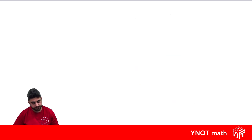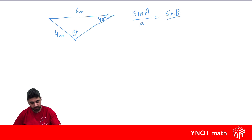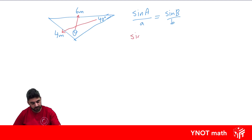Let's look at one more example. We have another non-right angle triangle with 40 degrees, theta, 6 metres, and 4 metres. Since we're finding an angle, we use the angle version of the formula: sin A over A equals sin B over B. Theta is opposite the 6, and 40 is opposite the 4. This satisfies our condition of two angles and two sides with one unknown. So: sine theta over 6 equals sine 40 over 4.